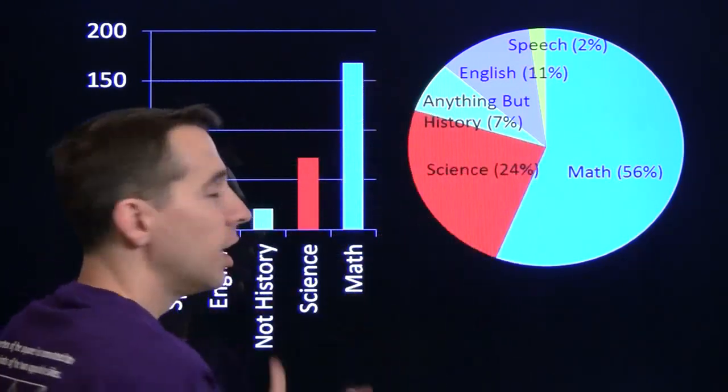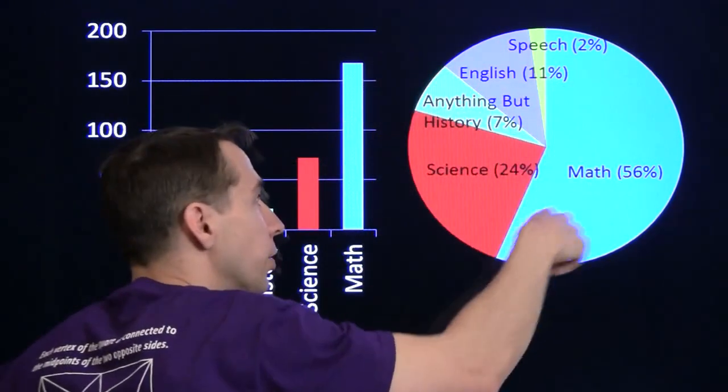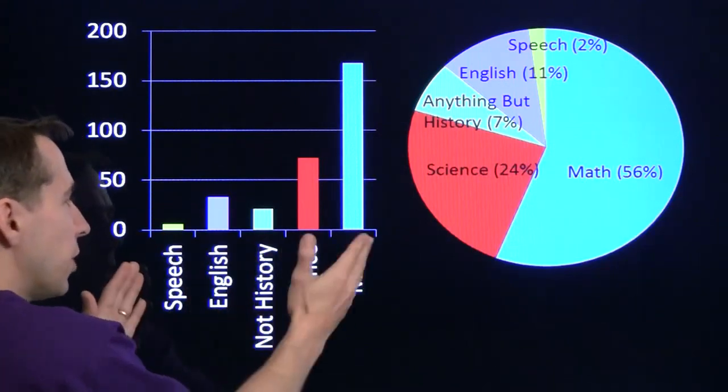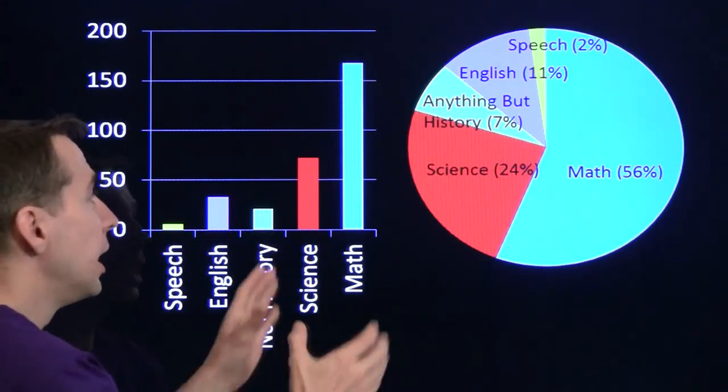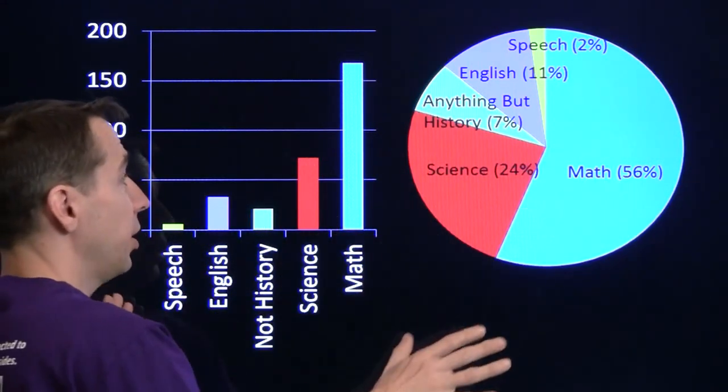So the bar chart is great for us to compare these to each other. The pie chart is great for comparing them to the entire thing.